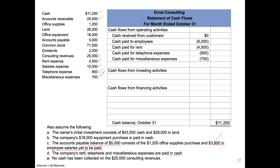Totaling up all the inflows against the outflows, we only had outflows from operating activities. Adding $6,200 plus $4,500 plus $850 plus $700 gives us $12,250 of total cash outflows — shown in parentheses as cash used by operating activities. Now let's look at the next section: cash flow from investing activities.